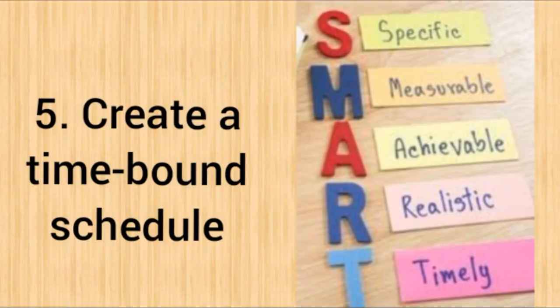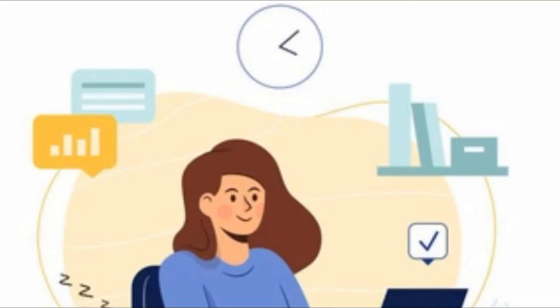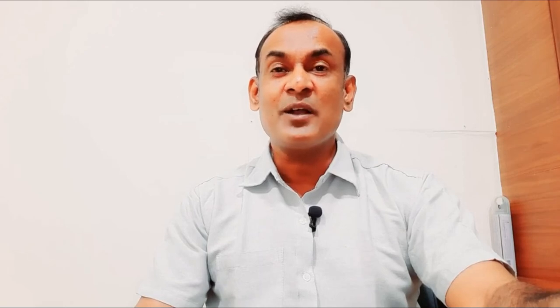The last part of SMART is T for Time-bound. Time-bound refers to the timeline you set for working toward your goals, as well as how long it will take to meet milestones and achieve your final results. Consider whether your goal is short-term or long-term. From there, determine a timeline and set a schedule to meet deadlines. Your timeline should be realistic and allow plenty of opportunities to make adjustments regarding relevance, specificity, and attainability.